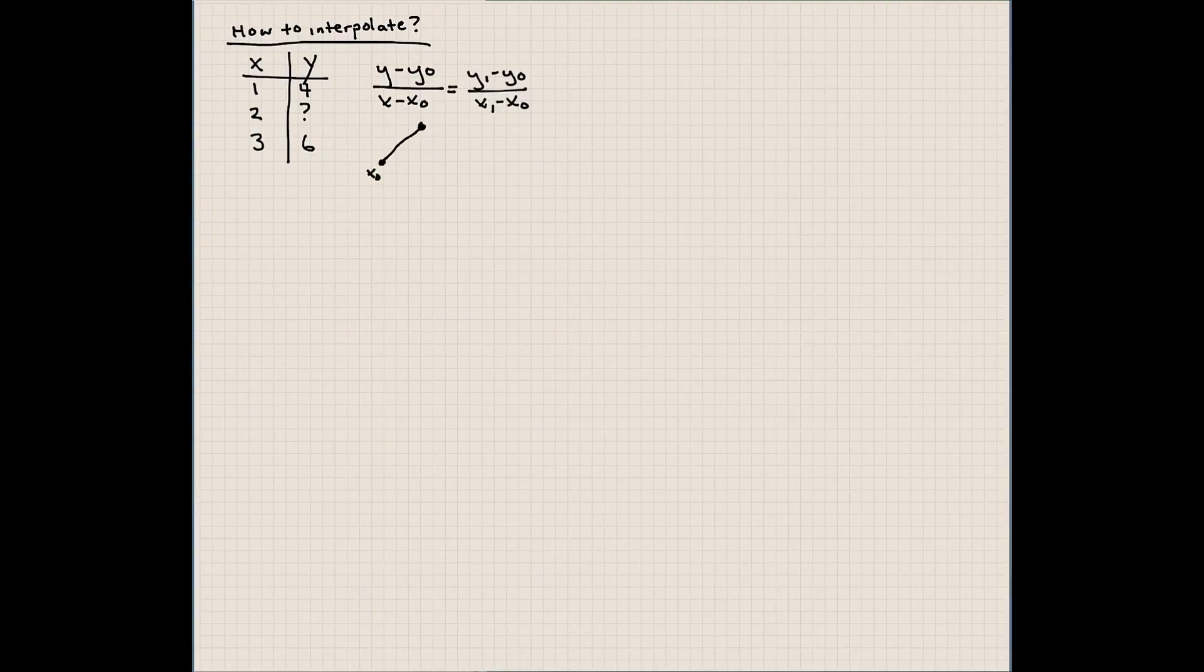If you know this is x₀, y₀ (those are the coordinates of that point), and this is x₁, y₁, we should be able to determine on this line any value between those two points, assuming that it's linear between the two. So this would be x and y.